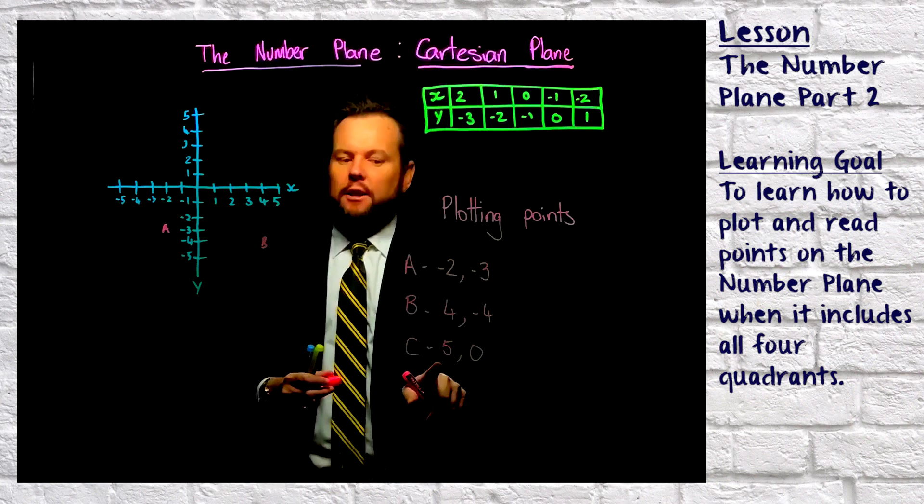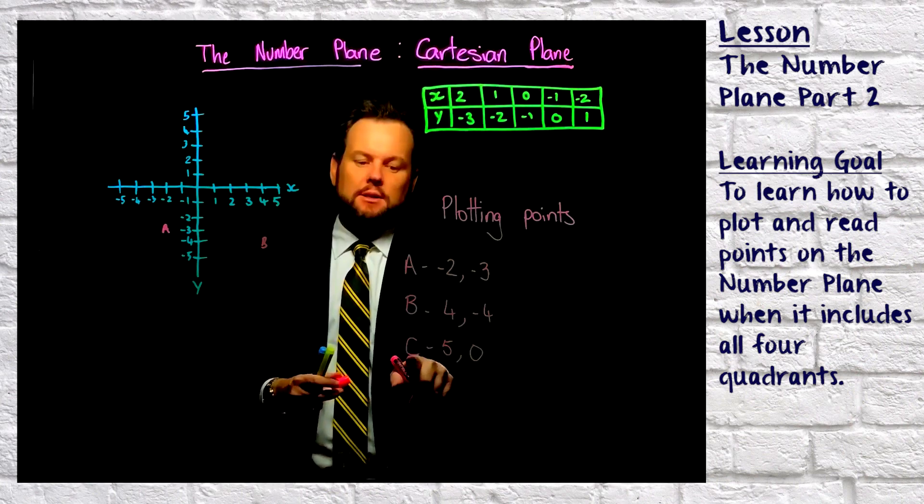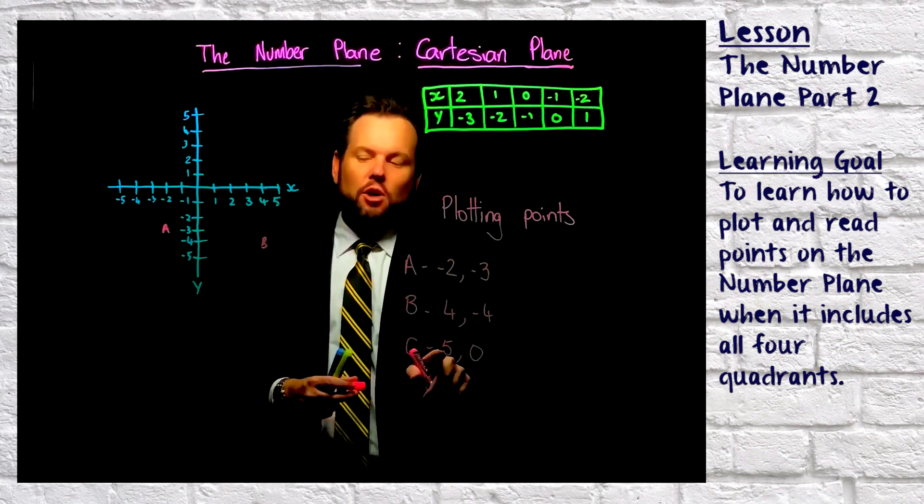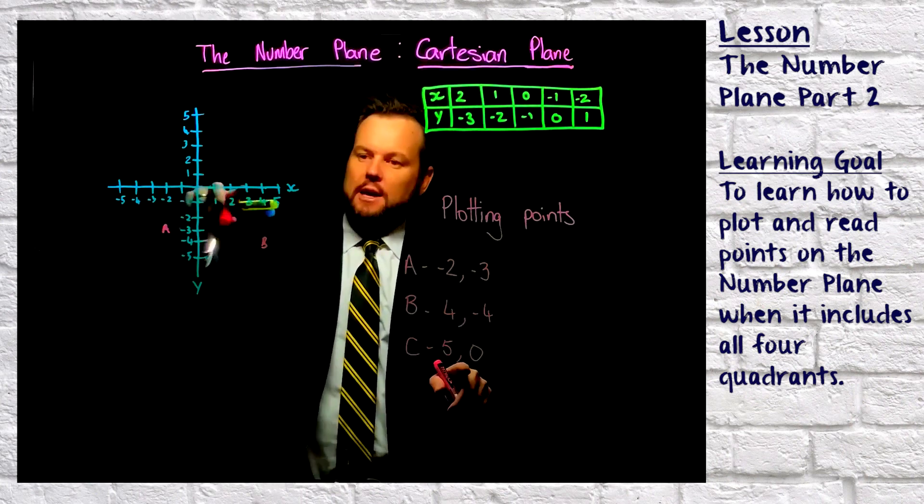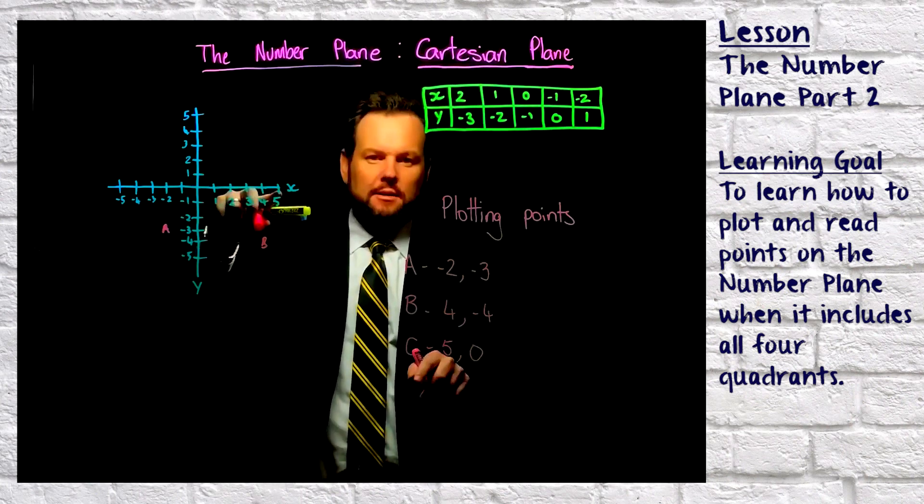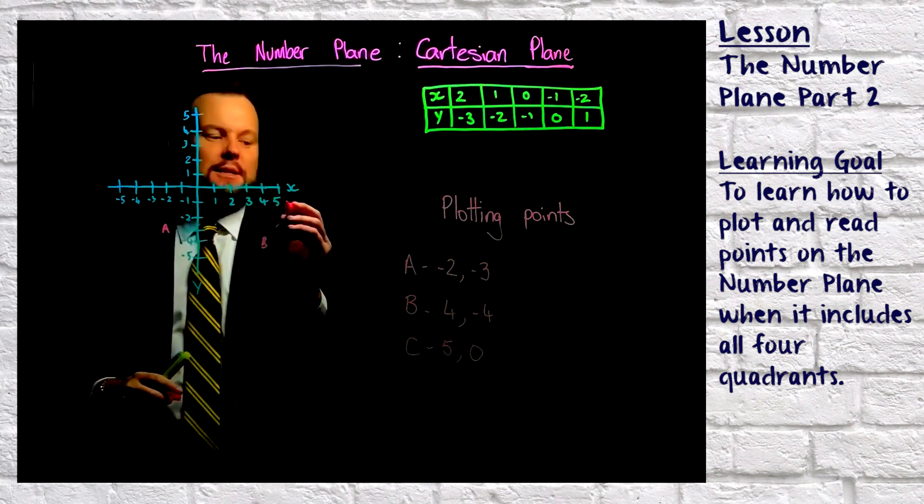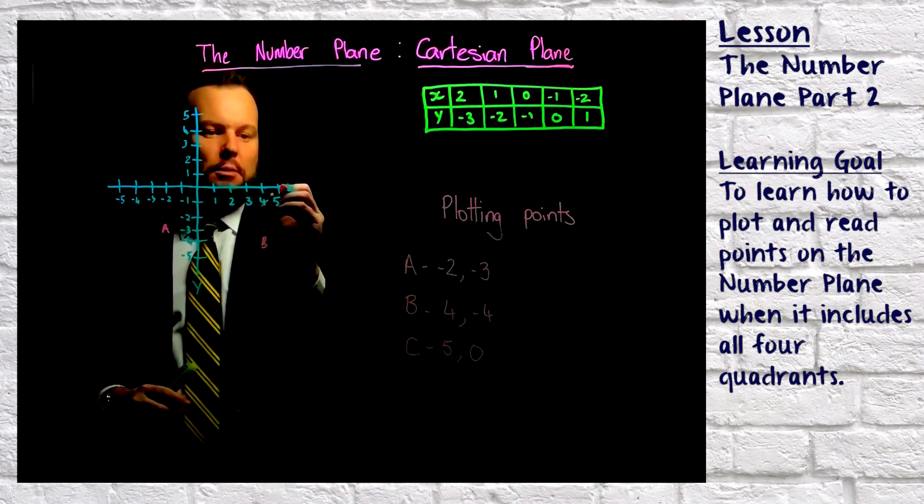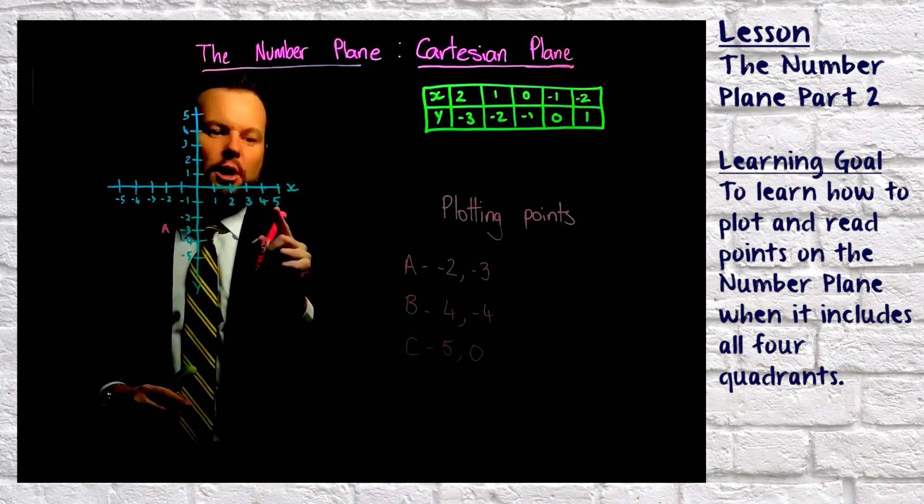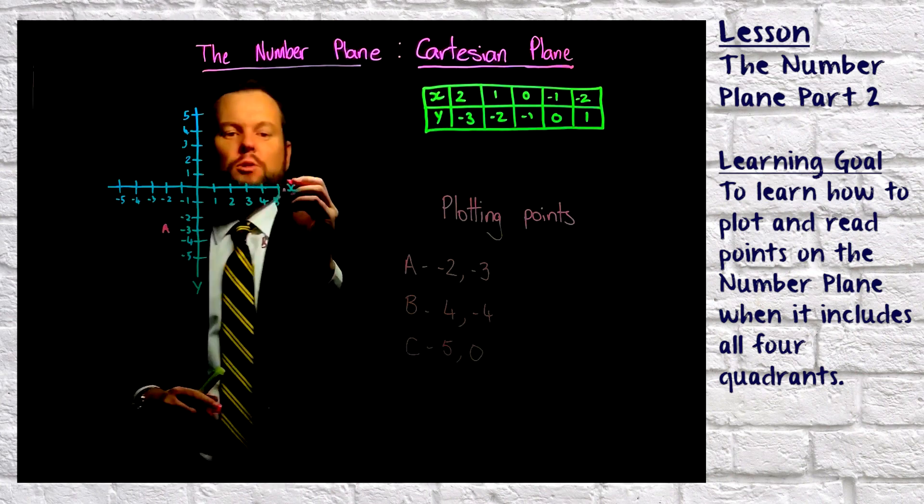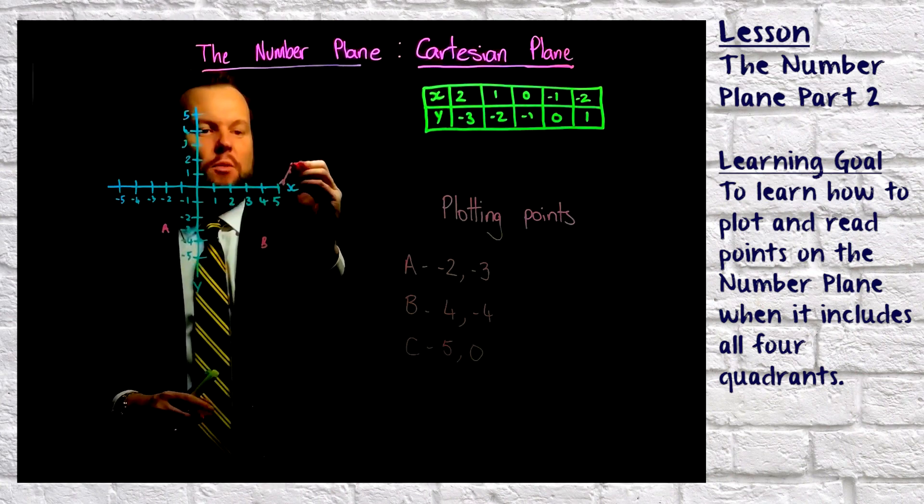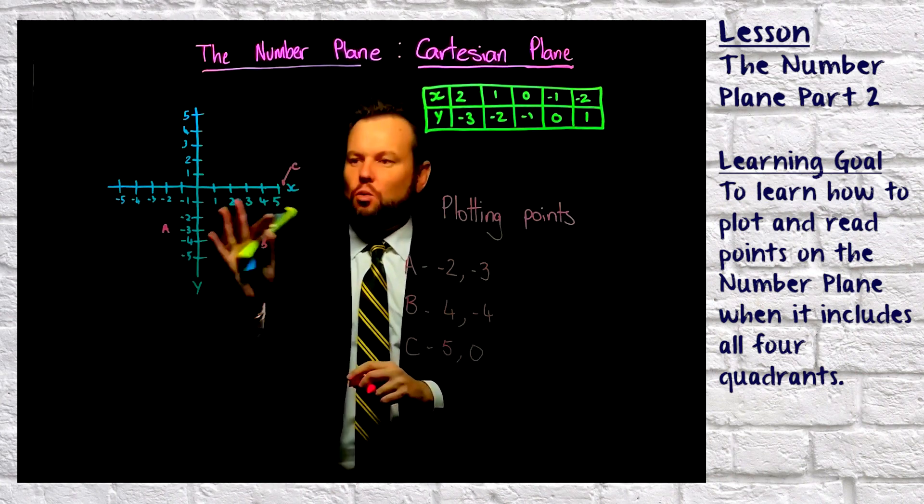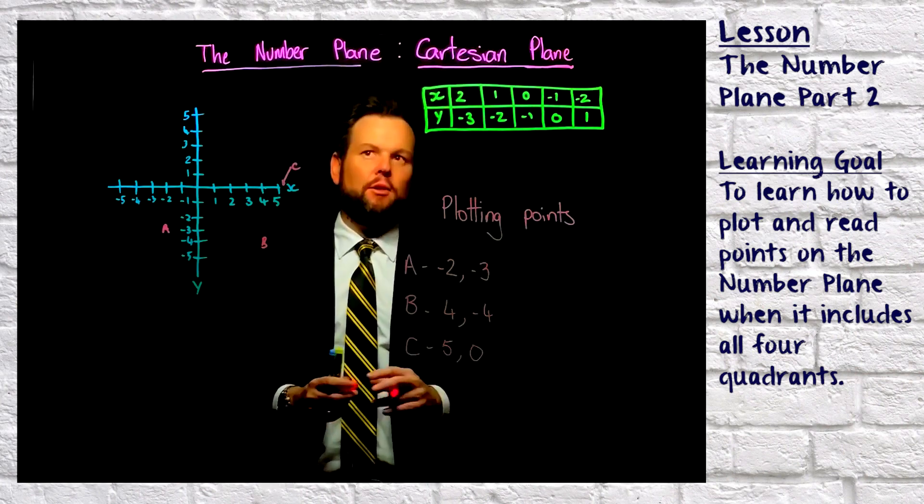And then finally we've got point C, and we've got five on the x-axis and then zero. So that means that our point C, we would put a C right there. I'm not going to put it on the line though. What I'll do is I'll draw an arrow. I just don't want it to rub out and make a mess while we're going through everything else.